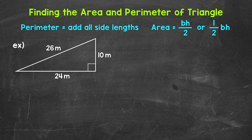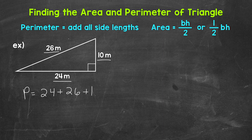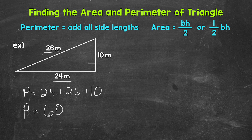Let's jump into number 1, where we have a right triangle, and we will start with perimeter. We need to add all of the side lengths — a triangle has three sides. So perimeter equals 24 meters plus 26 meters plus 10 meters. It doesn't matter what order you add the sides in — you'll get the correct perimeter however you do it. So 24 plus 26 gives us 50, plus 10 gives us a perimeter of 60 meters.